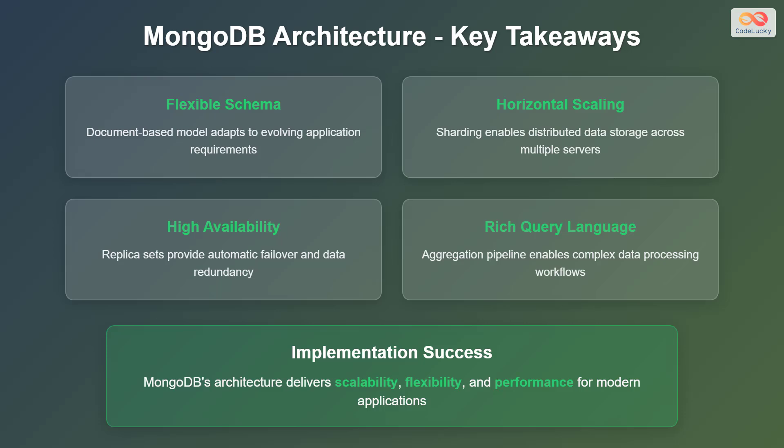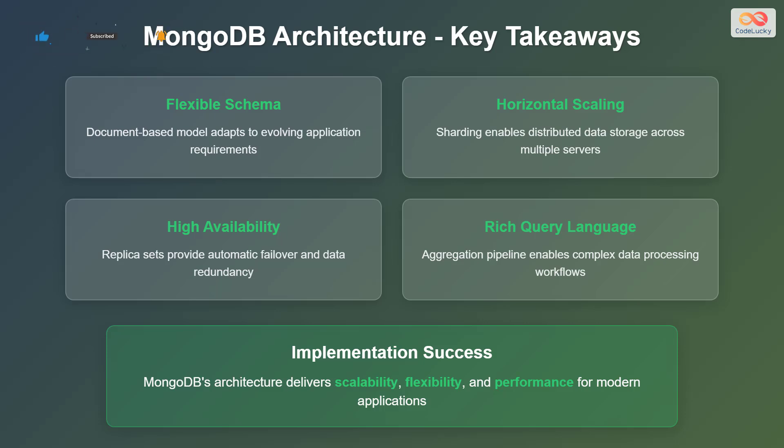Let's recap the key takeaways from our exploration of MongoDB's architecture. Its flexible schema allows the document-based model to adapt to evolving application requirements. Sharding enables horizontal scaling, distributing data storage across multiple servers. Replica sets ensure high availability with automatic failover and data redundancy. The rich query language, including the aggregation pipeline, enables complex data processing workflows. In conclusion, MongoDB's architecture delivers scalability, flexibility, and performance for modern applications.